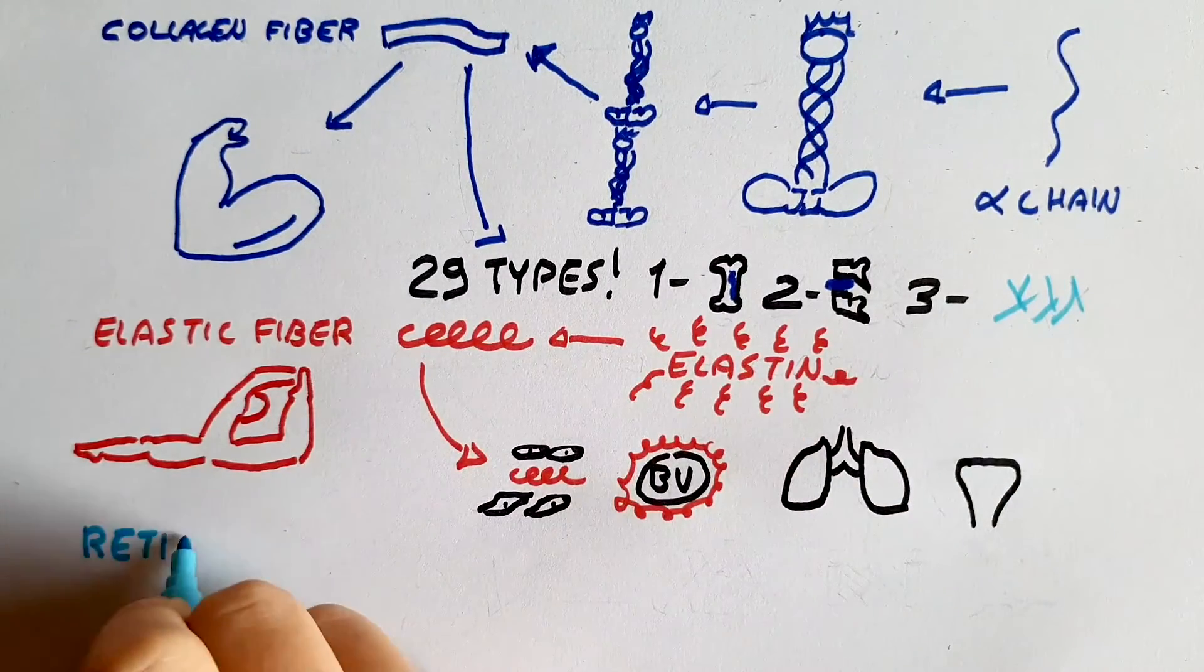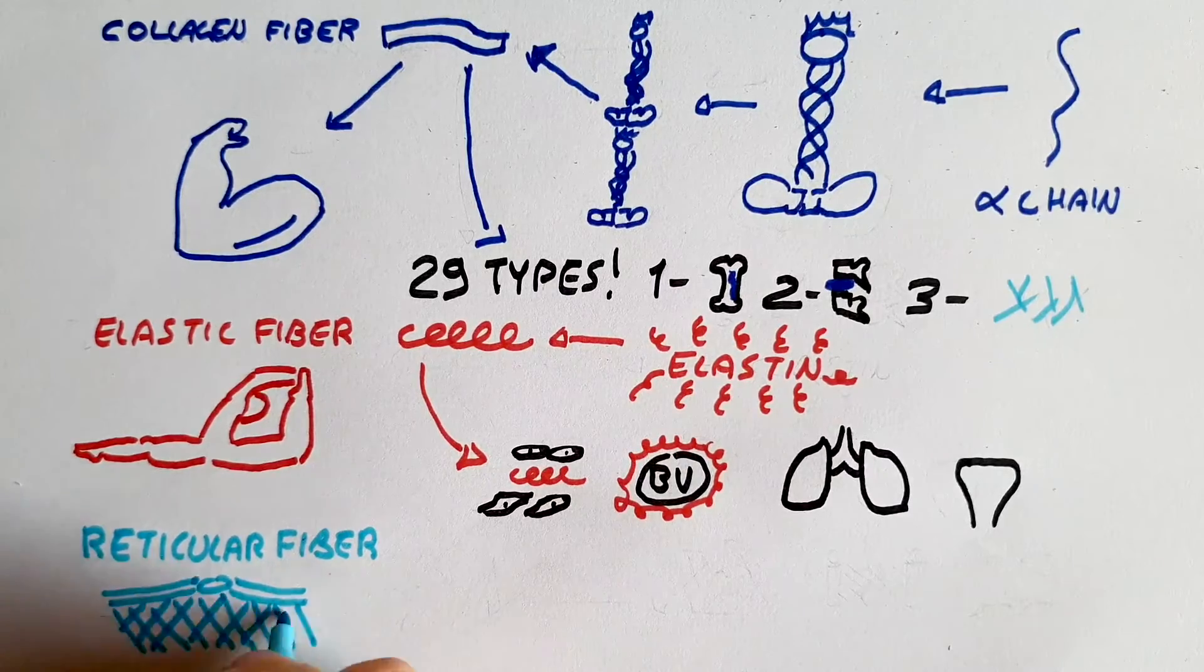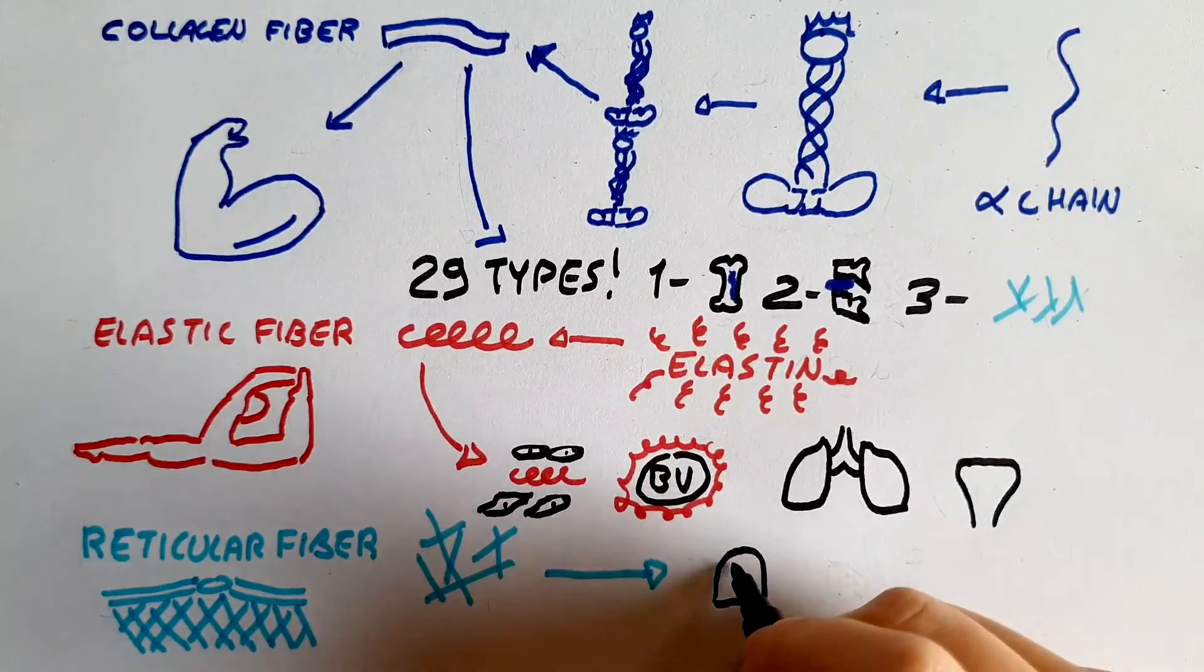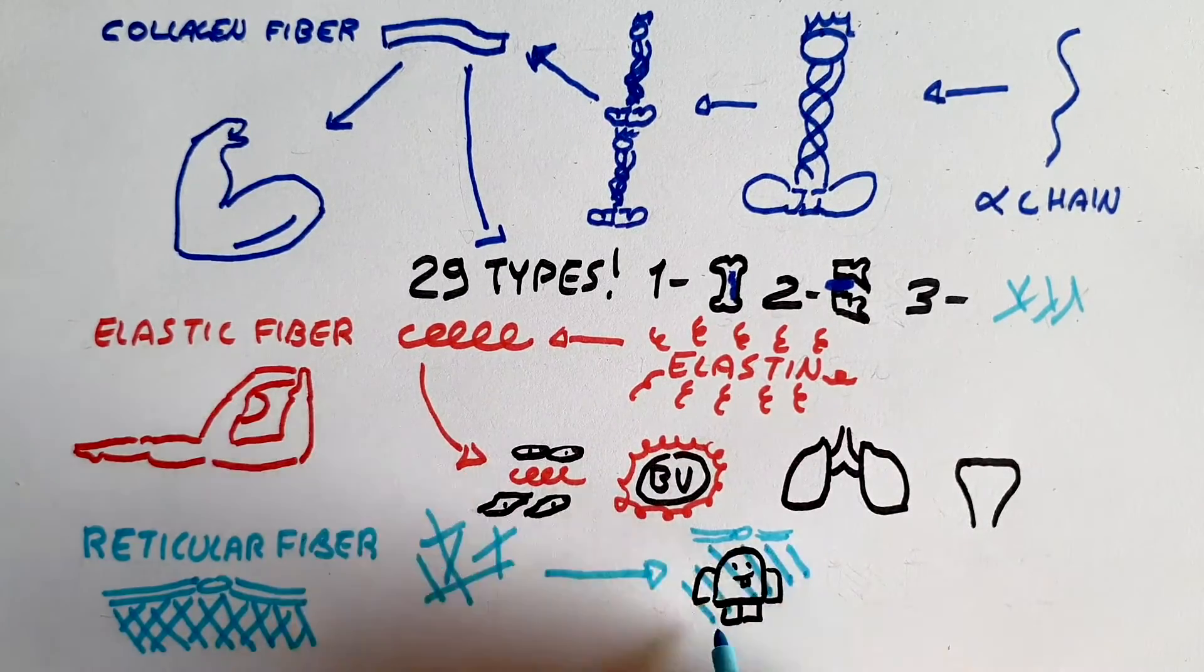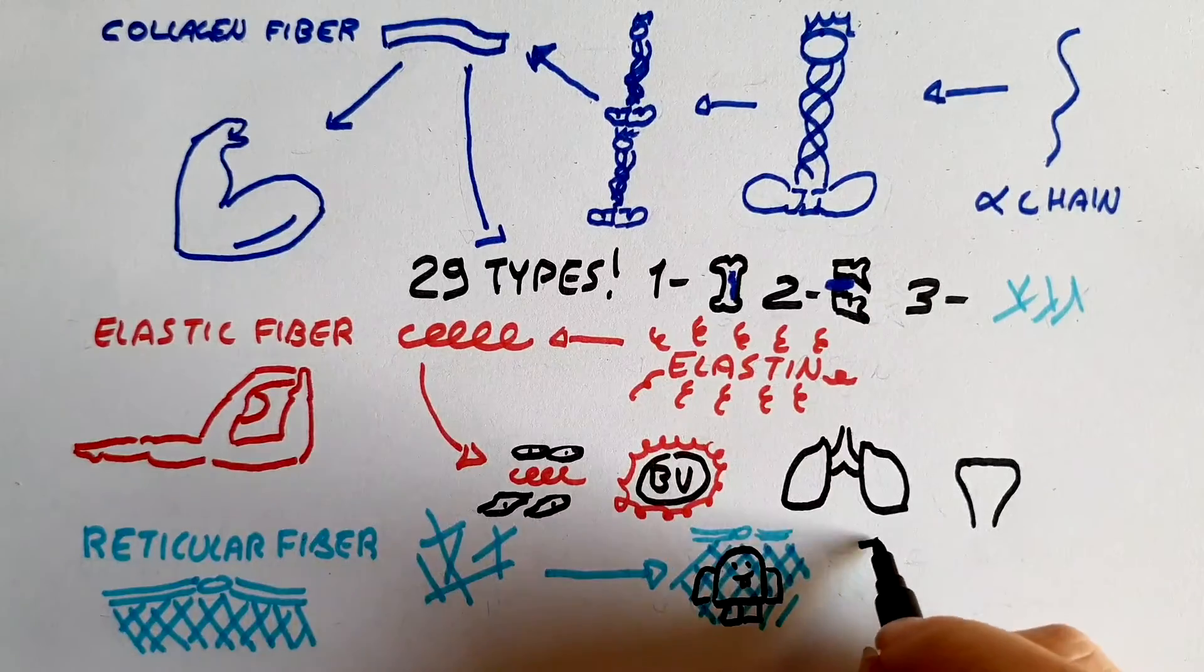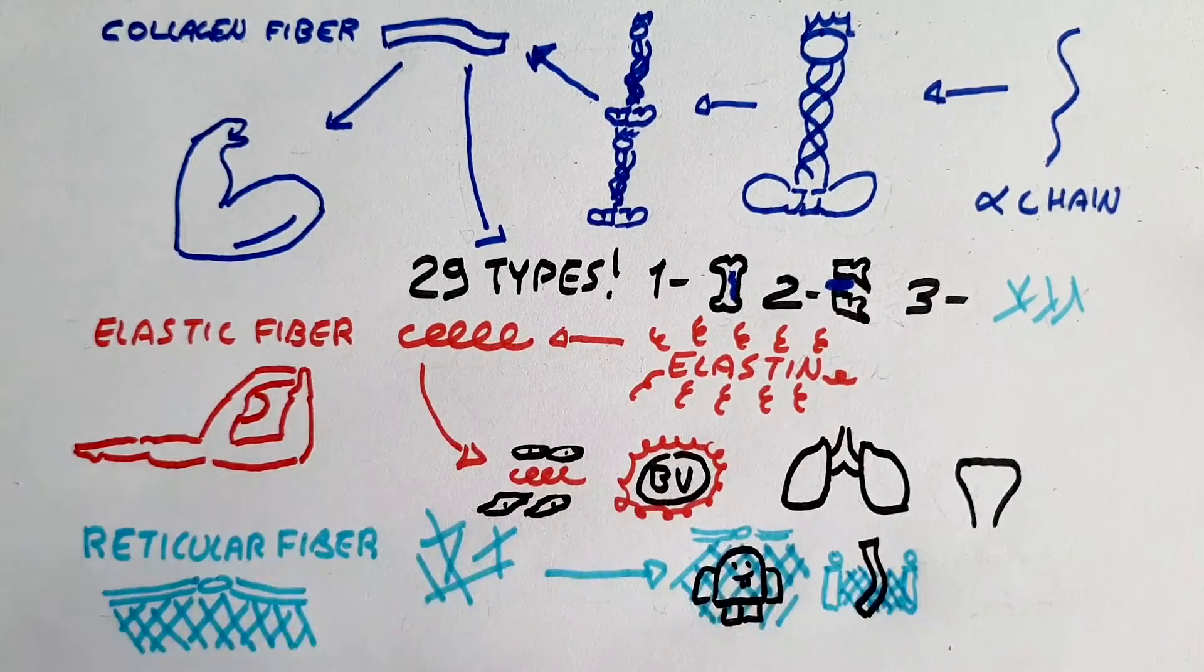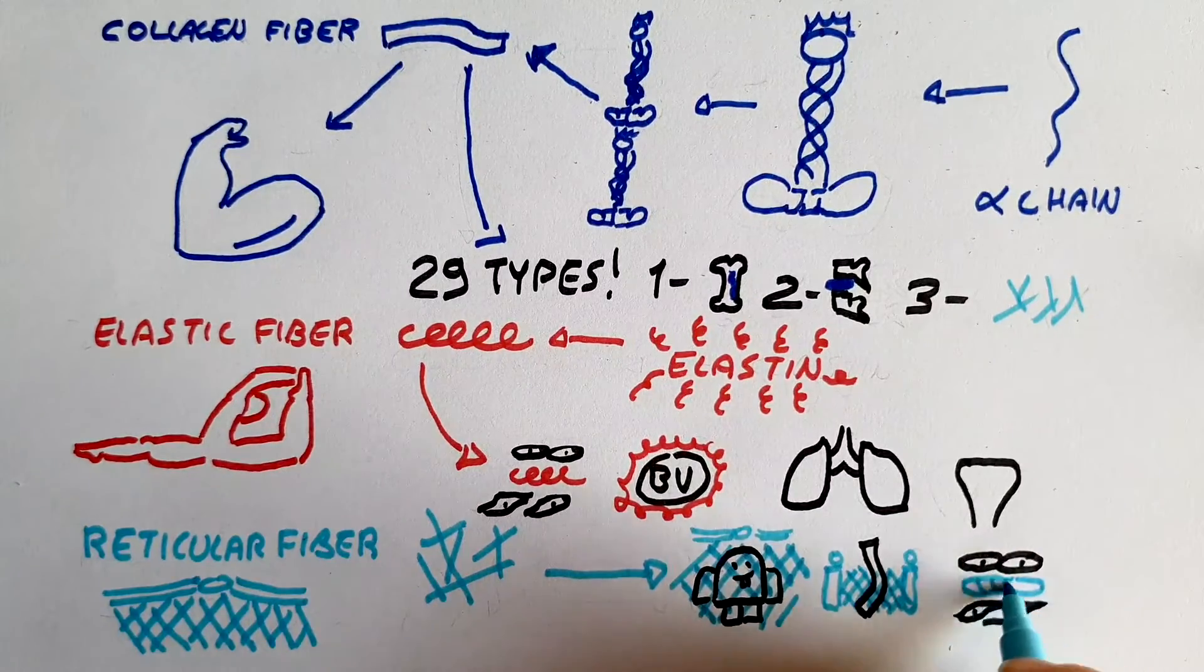The last fibrillary component is reticular fibers, which we have already mentioned, since they are made by collagen type 3 which forms a network not organized in bundles. Reticular fibers are not very strong and their main function is scaffolding. They surround adipocytes, small blood vessels, and they are present in epithelial tissues.